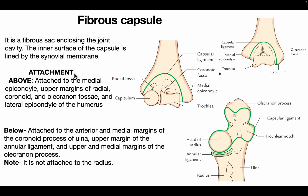Attachment of the fibrous capsule: above, it is attached to the medial epicondyle, the upper margin of the radial, coronoid, and olecranon fossae, and the lateral epicondyle of the humerus. Below, it is attached to the anterior and medial margin of the coronoid process of the ulna, the upper margin of the anterior ligament, and the upper and medial margin of the olecranon process. It is not attached to the radius.